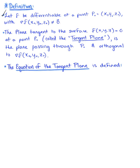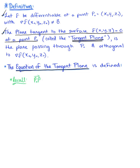Here is the formal definition for the equation of a tangent plane for an implicitly defined surface. We begin by letting f be differentiable at some point P0, with the gradient vector at P0 not equal to the zero vector. Then the plane tangent to the implicitly defined surface f(x, y, z) = 0 at the point P0 — called the tangent plane — is the plane passing through P0 and orthogonal to the gradient at that point. Recalling the general equation of a plane, defined by the position vector dotted with the normal vector equal to zero, we do the same thing here.